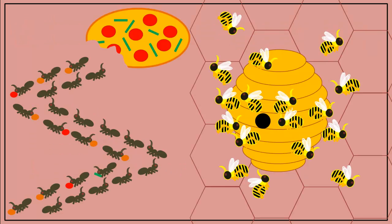So, next time you see ants stealing your food, or bees buzzing around their hive, consider that these insects are part of an insect colony, and that this colony is one of the most complex organisms on Earth.